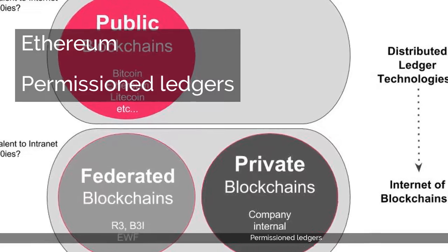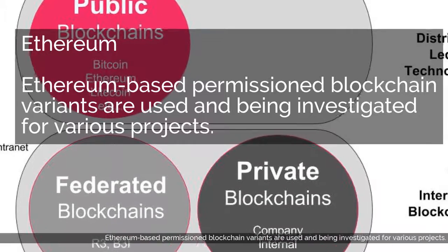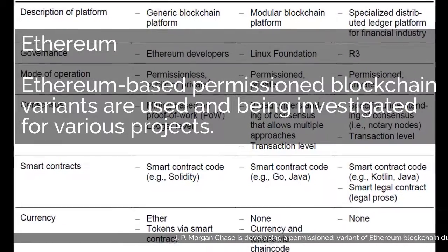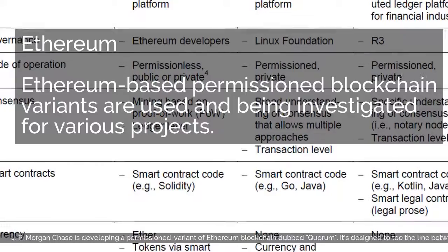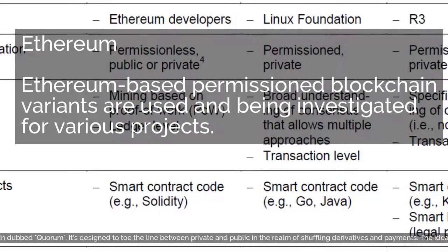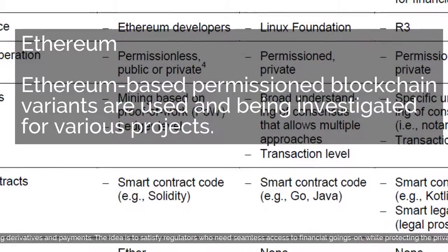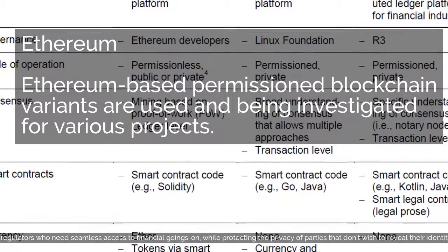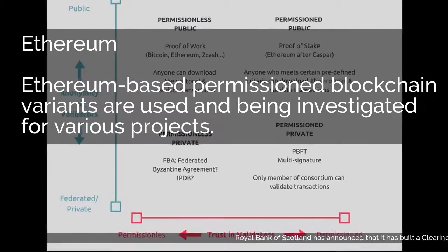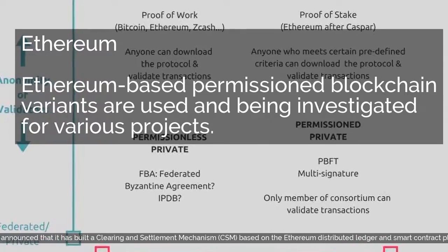Ethereum-based permission blockchain variants are used and being investigated for various projects. JPMorgan Chase is developing a permission variant of Ethereum blockchain dubbed Quorum, designed to navigate between private and public in the realm of shuffling derivatives and payments, satisfying regulators who need seamless access to financial goings-on while protecting the privacy of parties that don't wish to reveal their identities. Royal Bank of Scotland has announced that it has built a clearing and settlement mechanism, CSM, based on the Ethereum distributed ledger and smart contract platform.